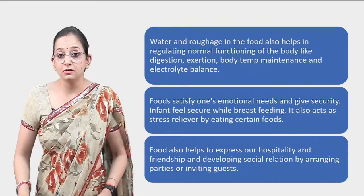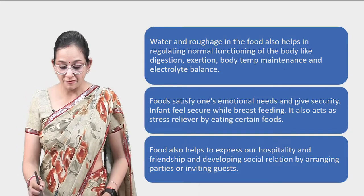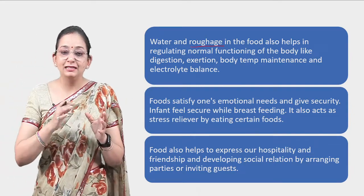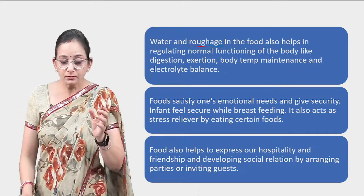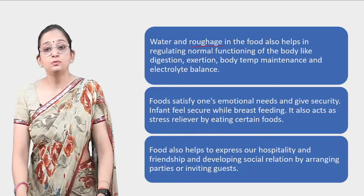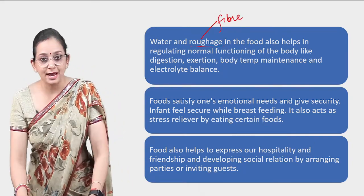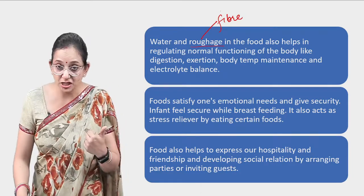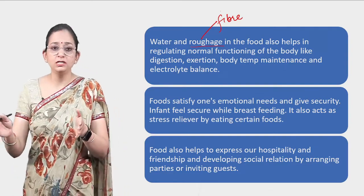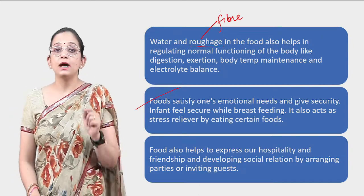Another function of food involves water and roughage. Roughage is the fiber — like the pectin in an apple peel, or the bran in a chapati. Roughage helps in regulating normal functioning of the body like digestion, excretion, body temperature maintenance, and electrolyte balance. Another important characteristic is that food satisfies emotional needs and gives security.